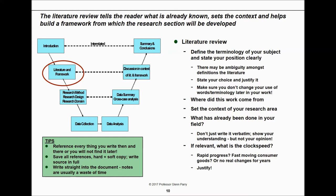The literature review tells the reader what's already known, sets the context, and helps you build a framework from which your research will be developed. It's here that you define the terminology for your subject — you need to state your position clearly, scope exactly what you will and won't present, and provide definitions. You'll find a lot of ambiguity in the literature; people use words to mean different things. In business, the word 'value' alone has six different definitions. Be very clear about the words you use, which definition you're applying, and justify why, given your context.